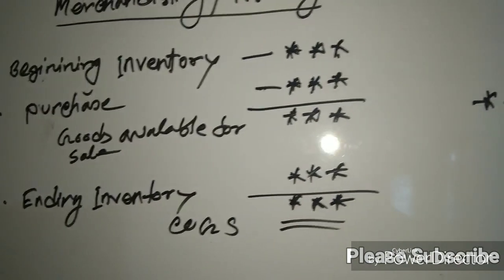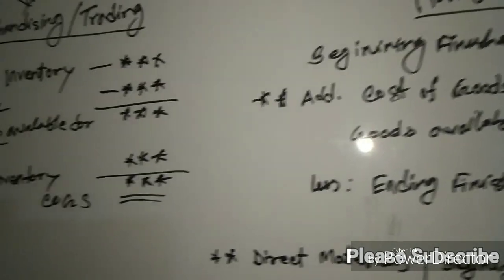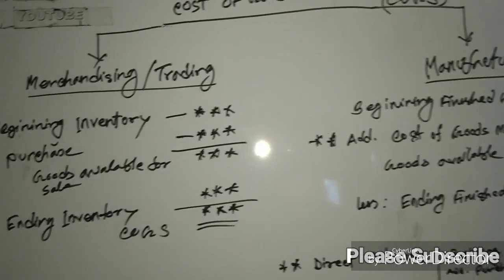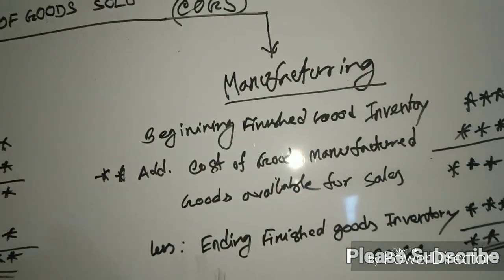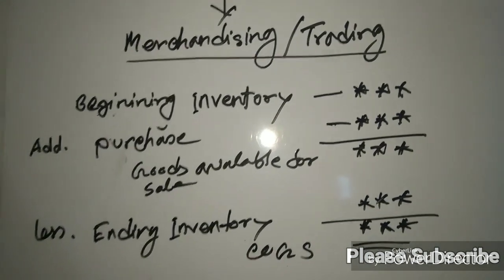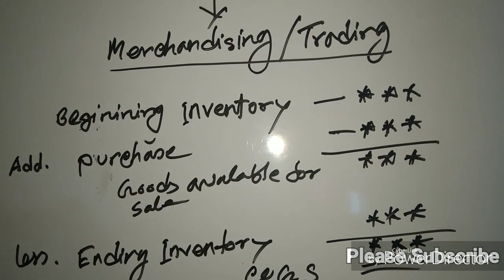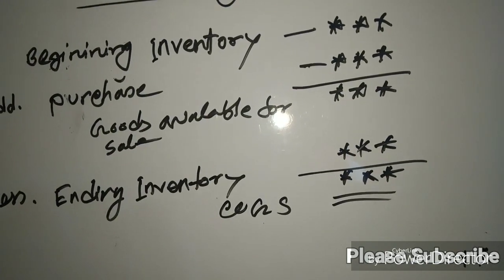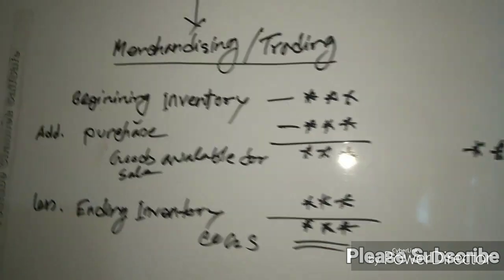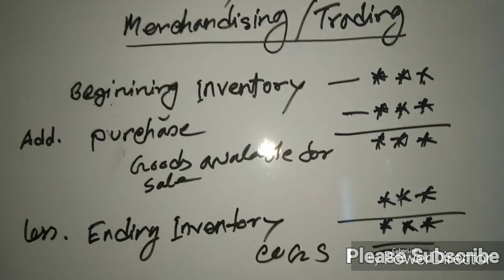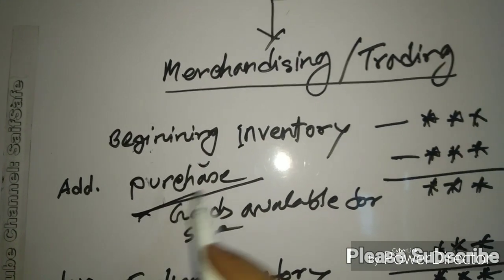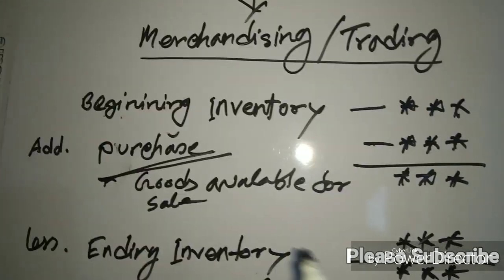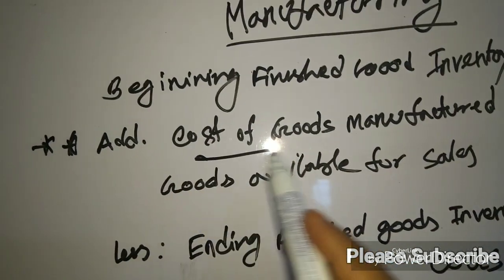Today we will be clear to our customers. The cost of goods sold for trading: beginning merchandise inventory, plus purchases, equals goods available for sale, less ending inventory, equals cost of goods sold. For trading, it's purchases — not manufacturing. For manufacturing, we use cost of goods manufactured.